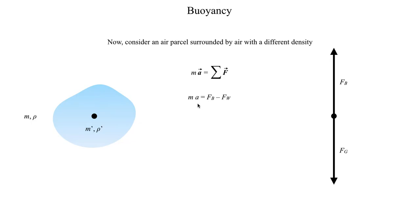Mass times acceleration in the z direction. Since we're modeling the air parcel, we want to determine whether the air parcel will accelerate upward or downward, and that's determined by the net force. There are two opposing forces: the buoyant force pointing upward, which we define as positive, and the force of weight pointing downward, which is negative because it points in the negative z direction. Force of gravity and force of weight are the same thing here.